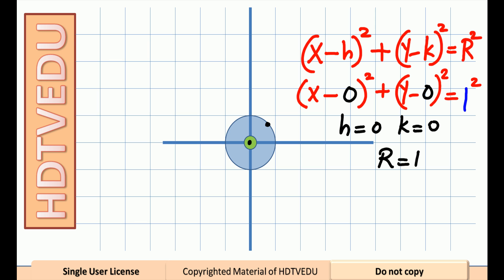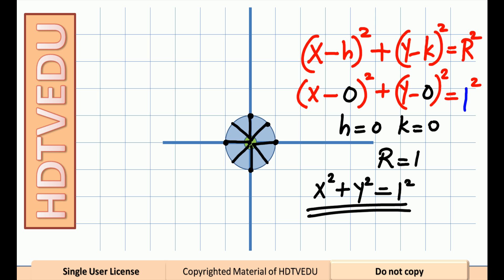How many x-intercepts? 2. How many y-intercepts? 2. What is the radius? It is 1. If I had asked you for the center of the circle x squared plus y...